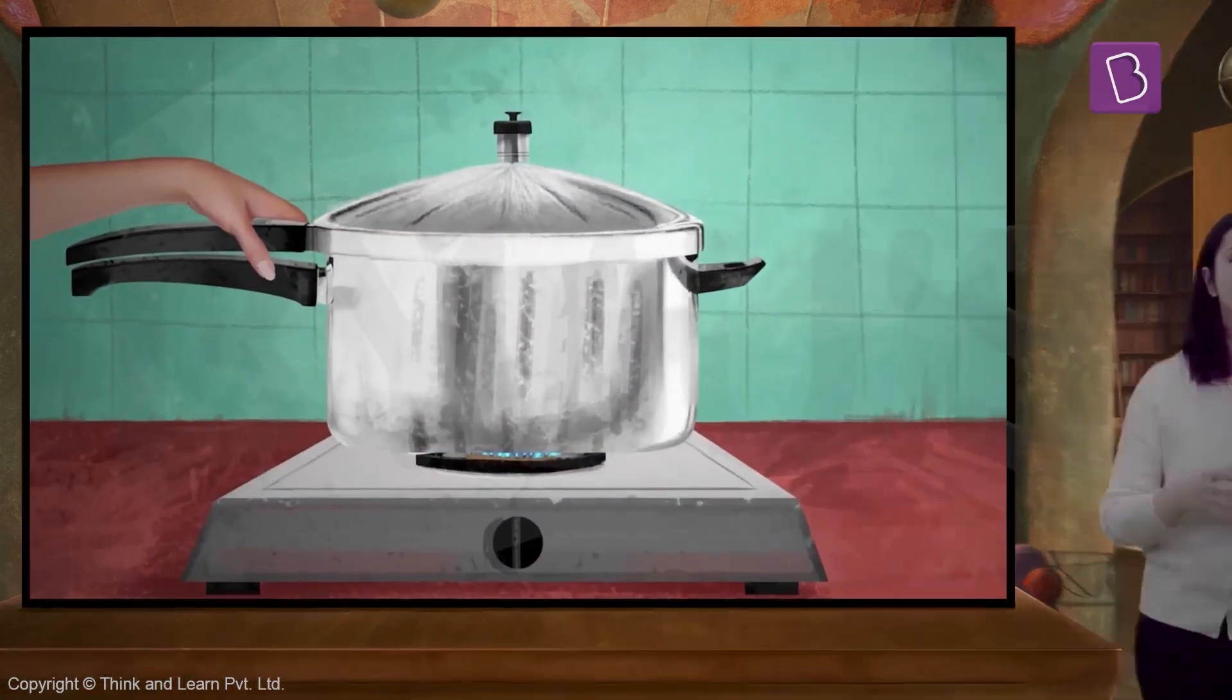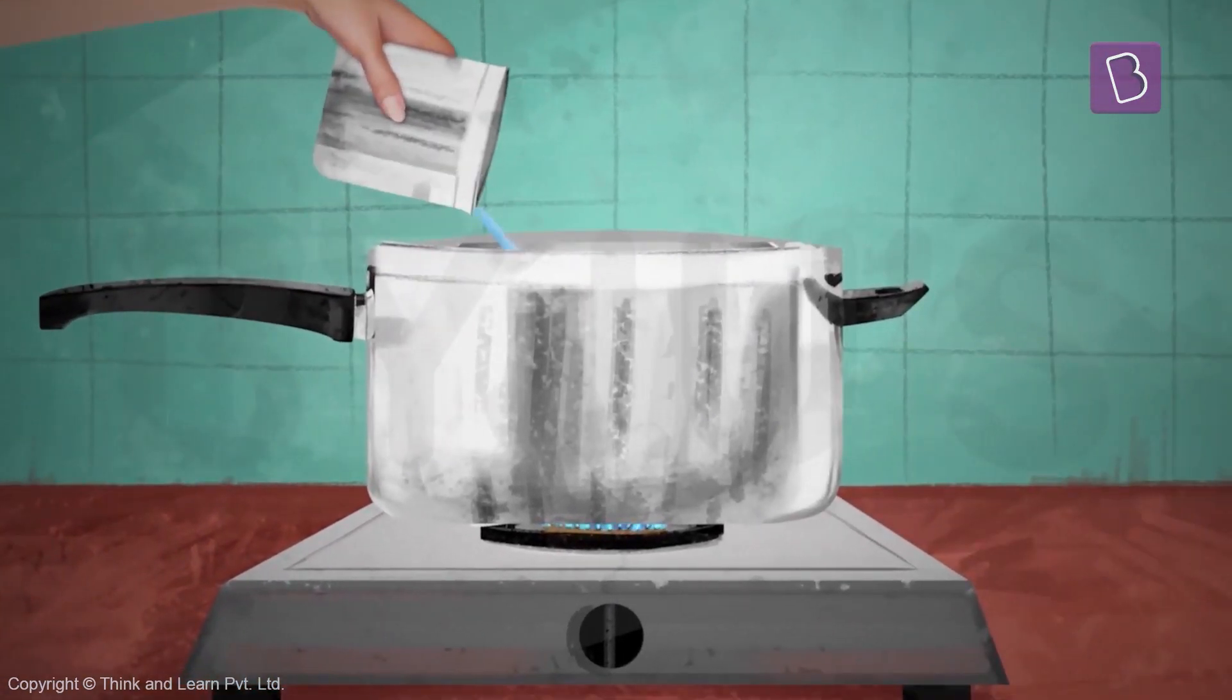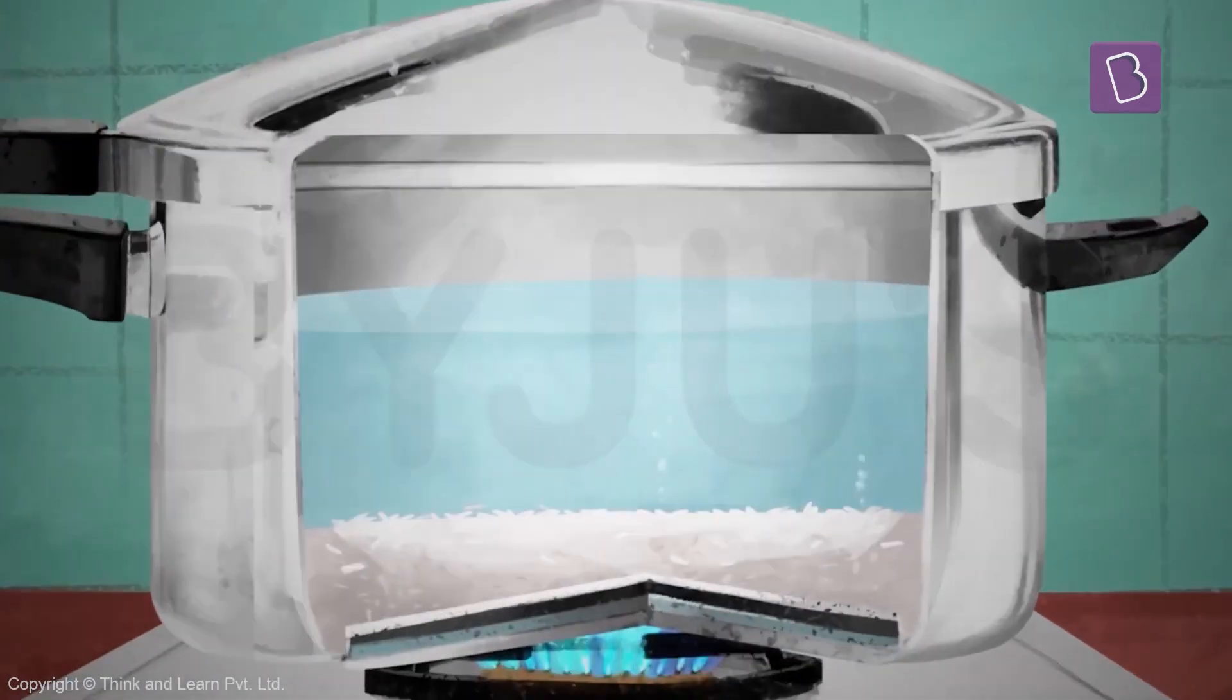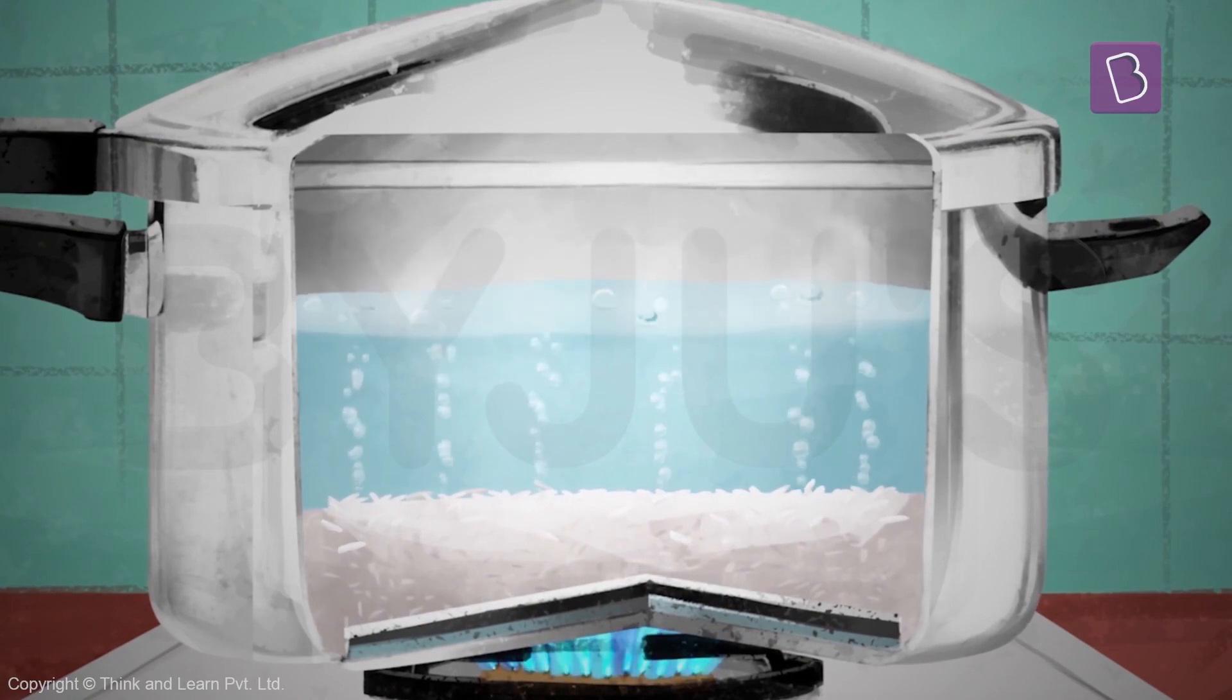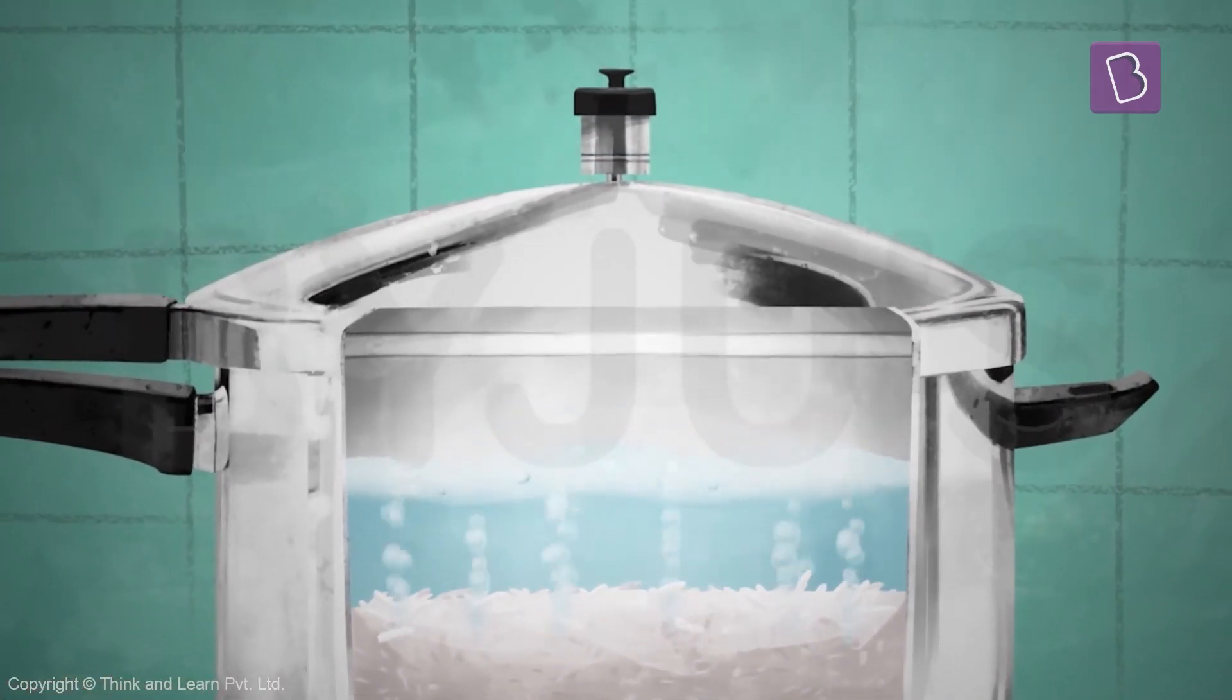I'll show you how a pressure cooker works first. You put raw rice in a vessel with some water. As the water boils and the rice starts cooking, the rice puffs up and it occupies more space.